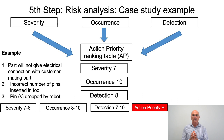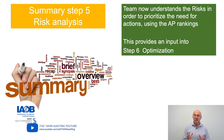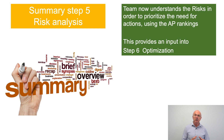To summarise step five, risk analysis: the team now has a good understanding of the risks within the process step being evaluated, and the AP rankings show where improvement actions need to be focused. This provides an input into step six, which is optimisation.